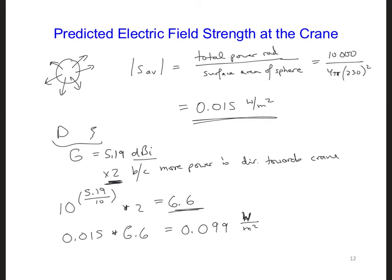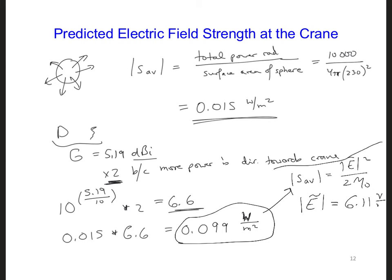Lastly we can use the relationship between the power density of a wave propagating in free space and the electric field of that wave. So this is S equals E squared over 2 eta naught, this is for a plane wave. And if we solve for E, plugging in this for S, we get the amplitude of E in the vicinity of the crane is 6.11 volts per meter.